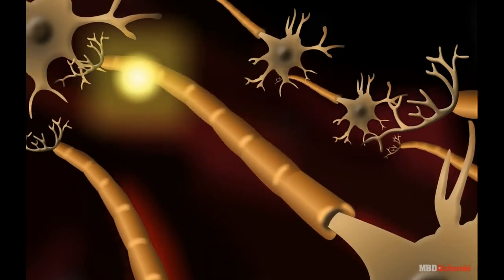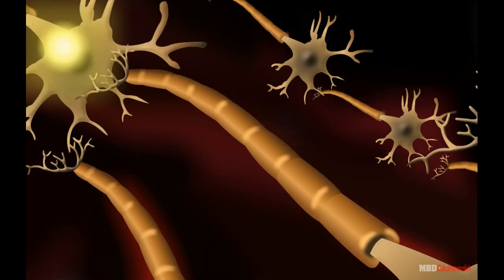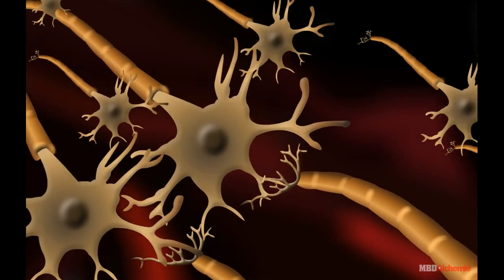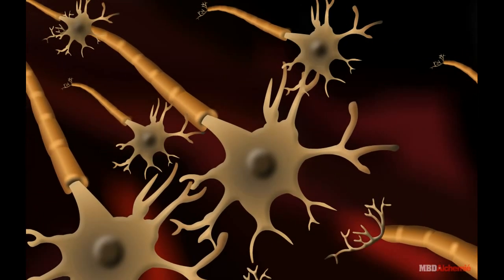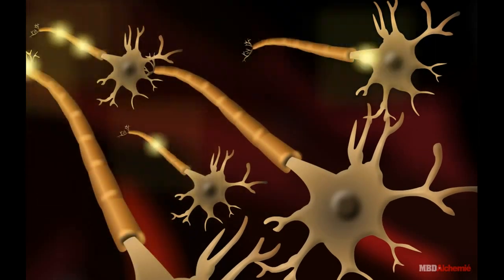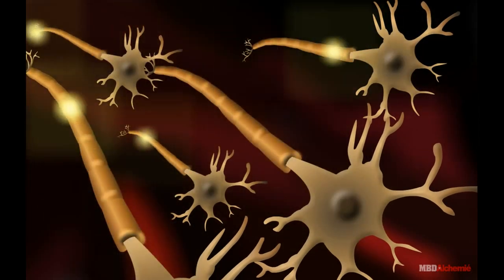All information from our environment is detected by the specialized tips of some nerve cells. These receptors are usually located in our sense organs. Nerve cells or neurons respond to external and internal stimuli.